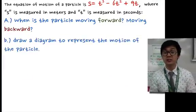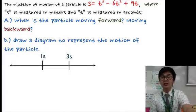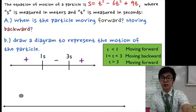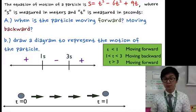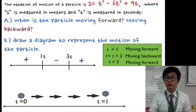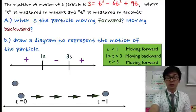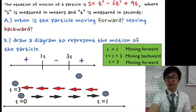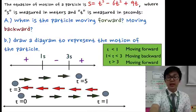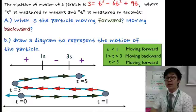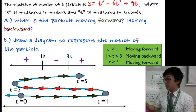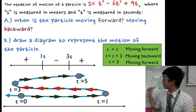To illustrate the motion: starting at t equals 0, the particle moves forward to t equals 1, shown with a rightward arrow. From t equals 1 to t equals 3, it moves backwards, shown with a leftward arrow. From t equals 3 to t equals 5, it moves forward again with a rightward arrow. This is how we apply the sign chart to illustrate the motion of an object using velocity and calculus.